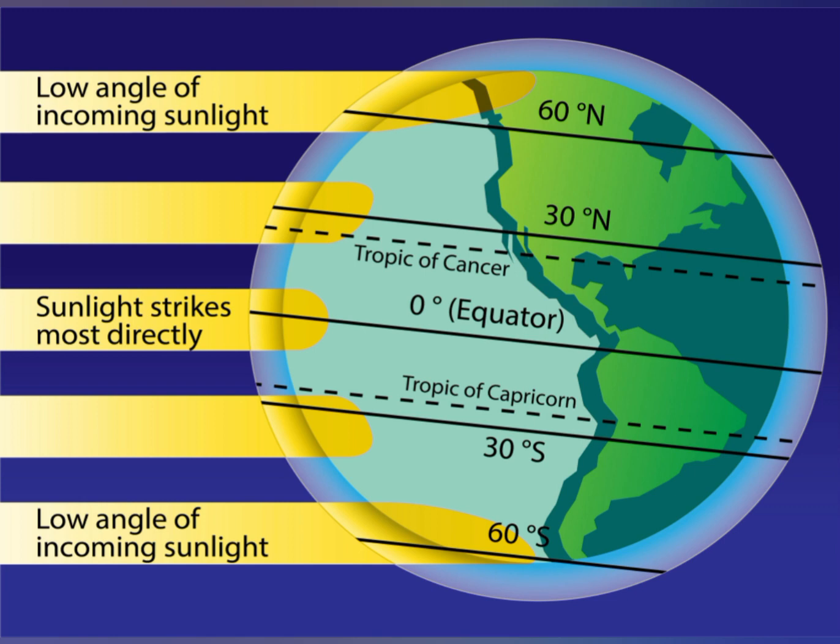Near the equator, every day is like any other day of the year and weather is almost the same. Towards the tropics — between 23 and a half degrees north and south of the equator — it is hot during the summer months when solar energy falls directly or vertically on that particular hemisphere, and it becomes cooler when the sun has moved towards the other hemisphere.